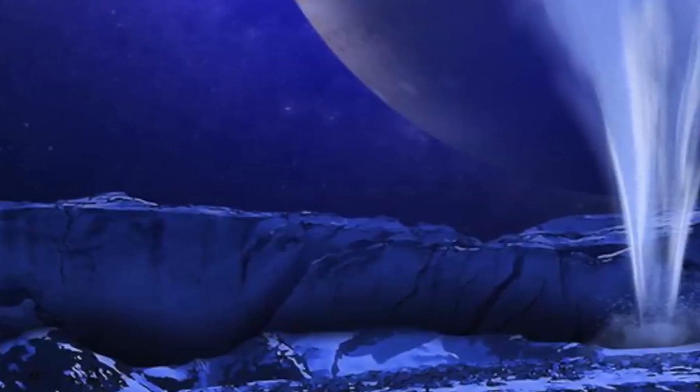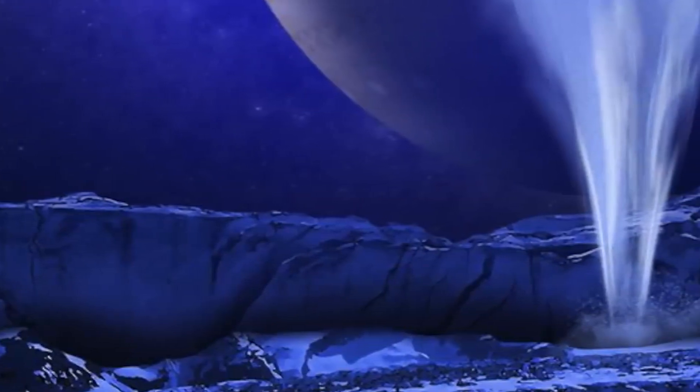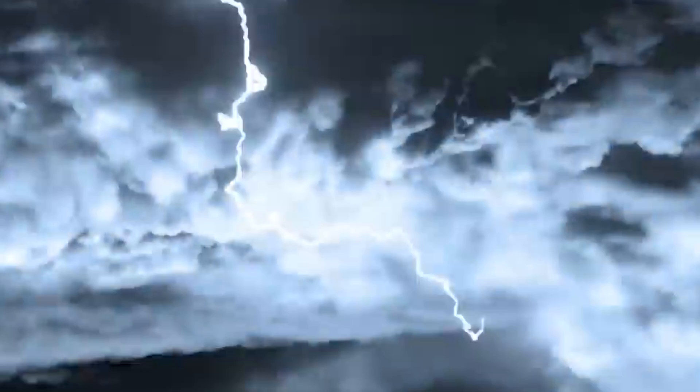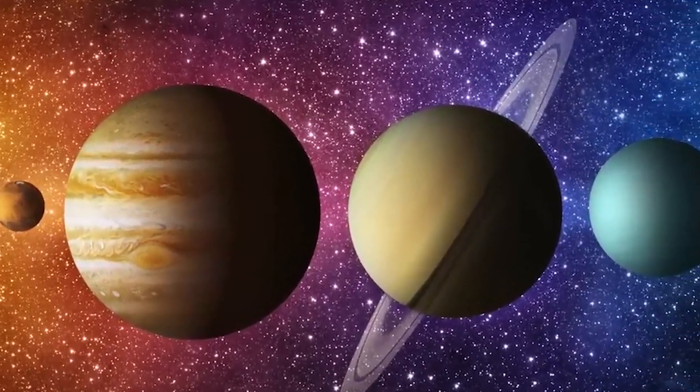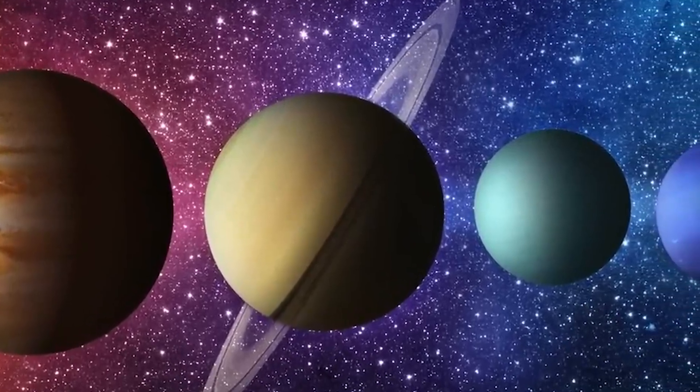Neptune is one of the coldest planets in our solar system. Its average temperature is a bone-chilling negative 360 degrees Fahrenheit. The planet is so far from the sun that sunlight takes about four hours to reach it.